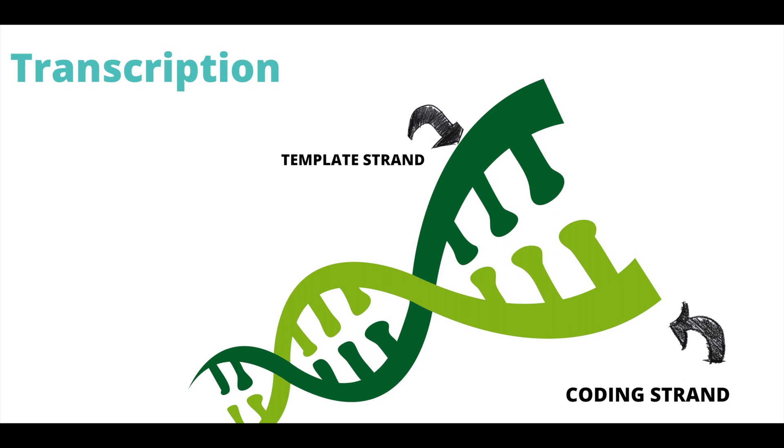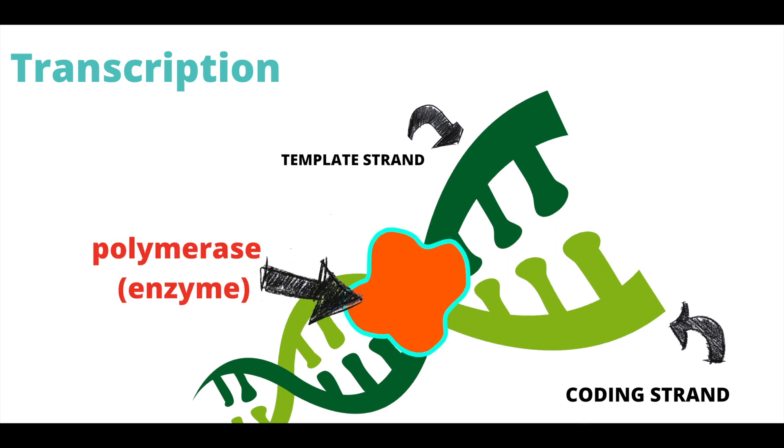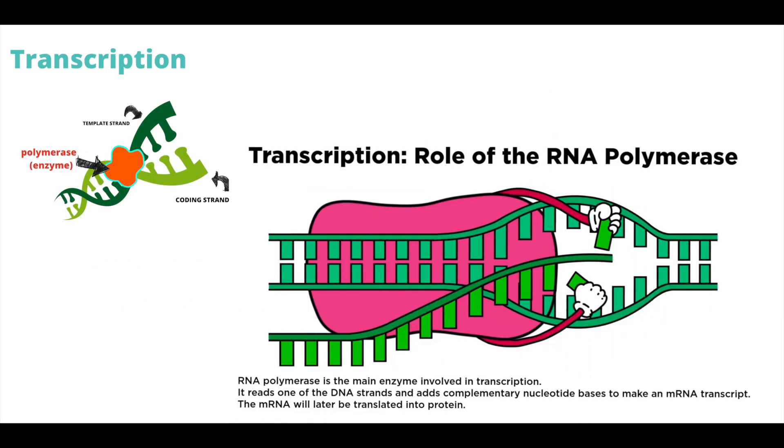One relevant enzyme used during transcription is polymerase. Polymerase opens and splits DNA into two strands and stabilizes them. Most importantly, it synthesizes mRNA by reading and decoding the nucleotides on the template strand. It breaks the double helix and creates a new mRNA strand.